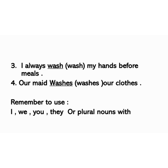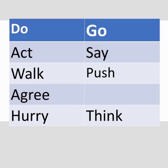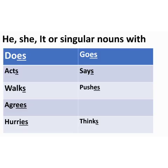Remember to use I, we, you, they, or plural nouns with the base form of the verb: do, act, walk, agree, hurry, go, say, push, think. Use he, she, it, or singular nouns with the third-person singular form: does, acts, walks, agrees, hurries, goes, says, pushes, thinks.